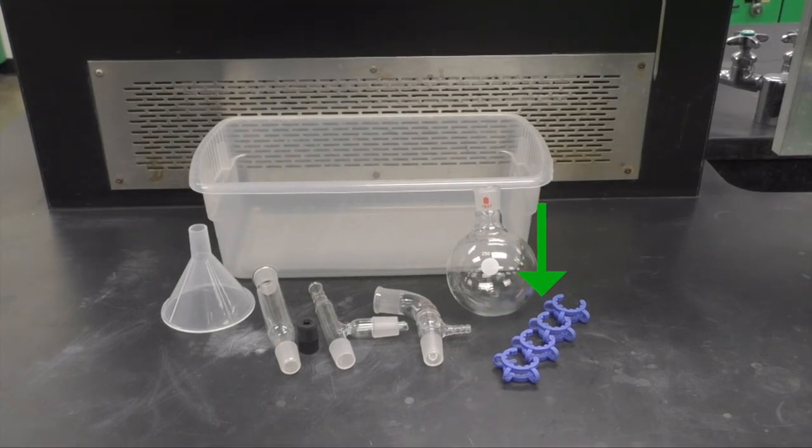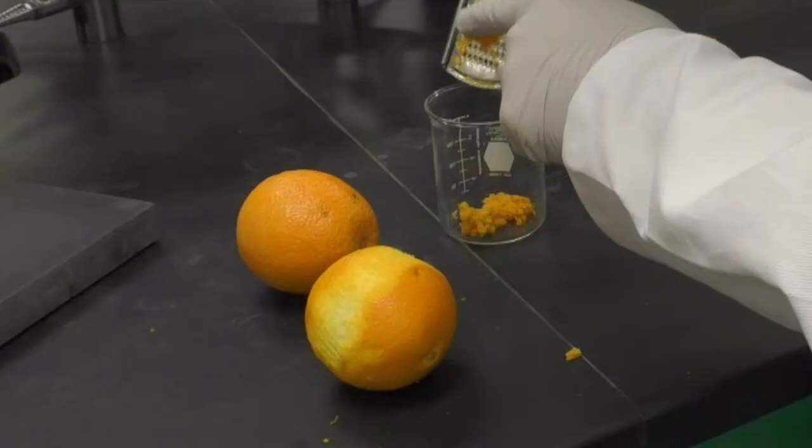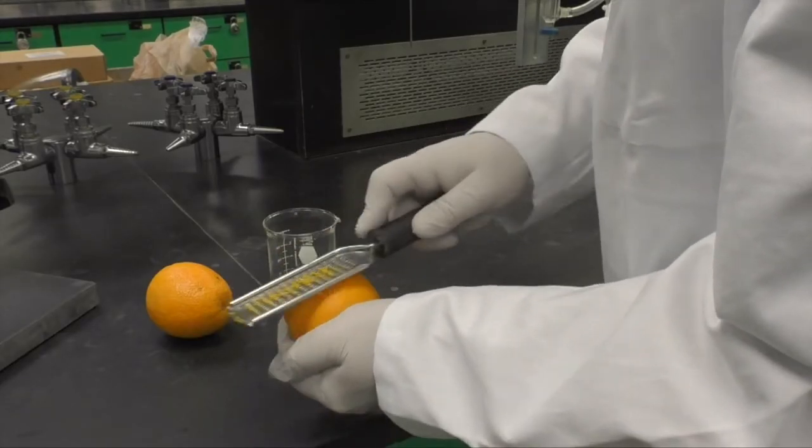You will have brought in two or more oranges to supply the zest needed for the isolation. The zest of a fruit is the very outer layer. When removing the zest, try to avoid the next white layer known as the pith. To remove the zest, you will need a zester and a beaker.